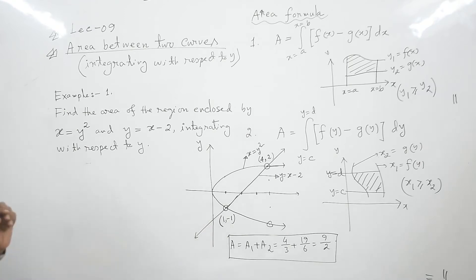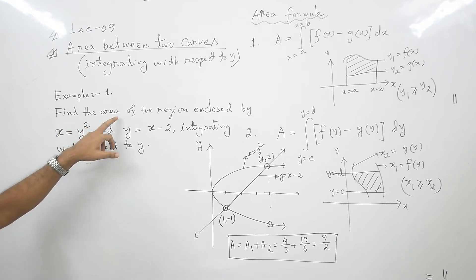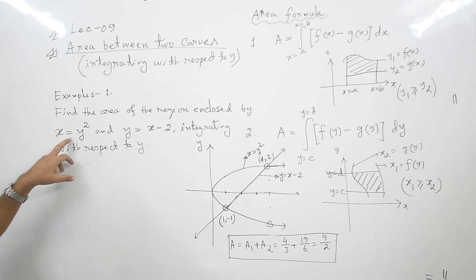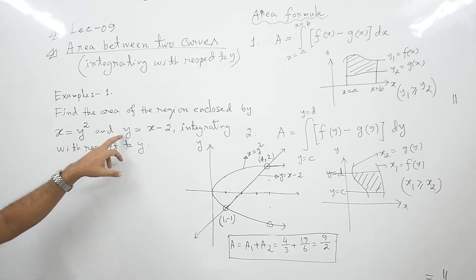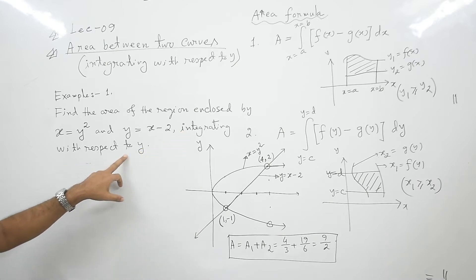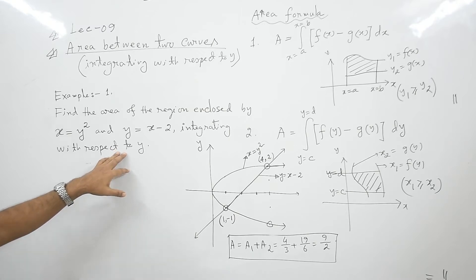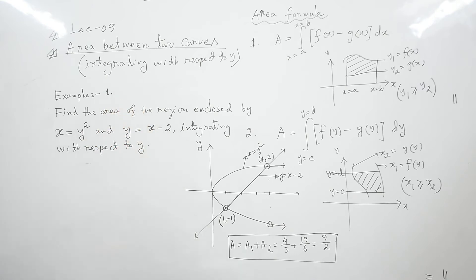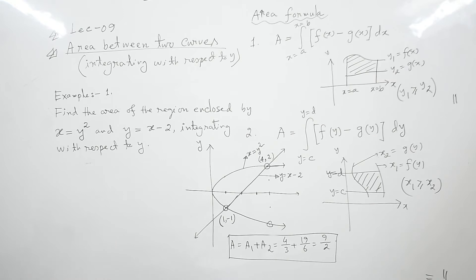Let us first solve Example 1. Find the area of the region enclosed by x equals y squared and y equals x minus 2. Here you need to integrate with respect to y. If your question tells you to integrate with respect to y, you do so; if it does not specify, you can use any method to calculate the area of the region enclosed by these two curves.